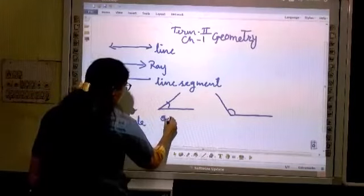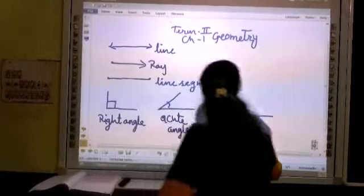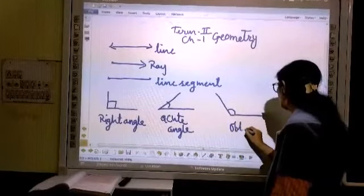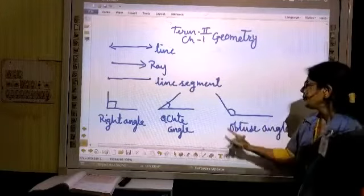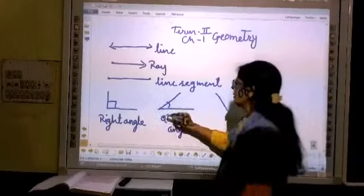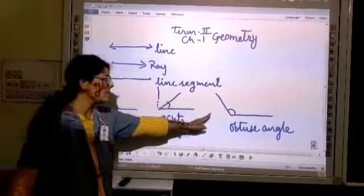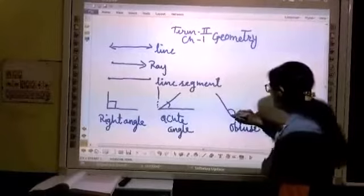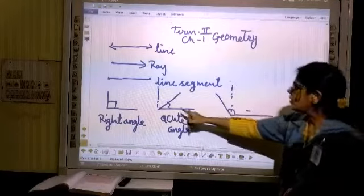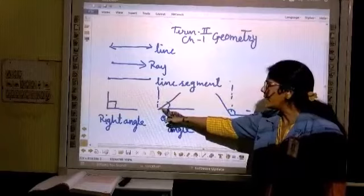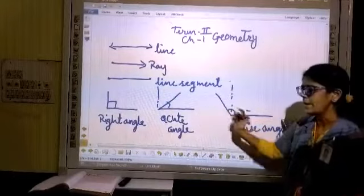Acute angle. And obtuse angle. Acute angle is smaller than 90 degree. It is always smaller than 90 degree and this obtuse angle is always bigger than 90 degree. Here is the measurement of 90 degree right angle. Here also you can see the measurement of 90 degree but acute angle is always smaller than 90 degree and obtuse angle is always bigger than 90 degree.